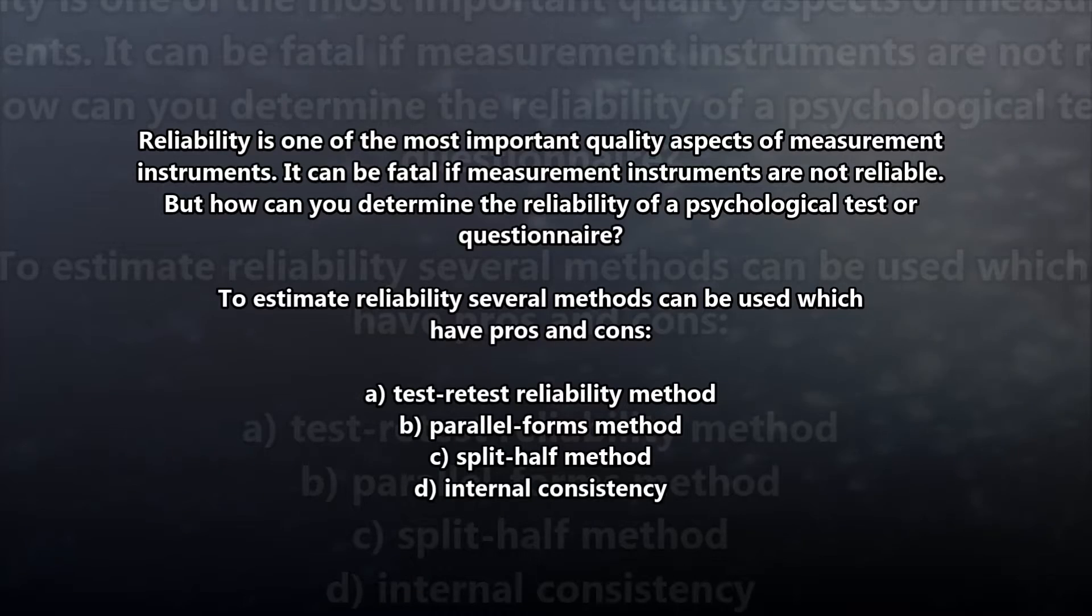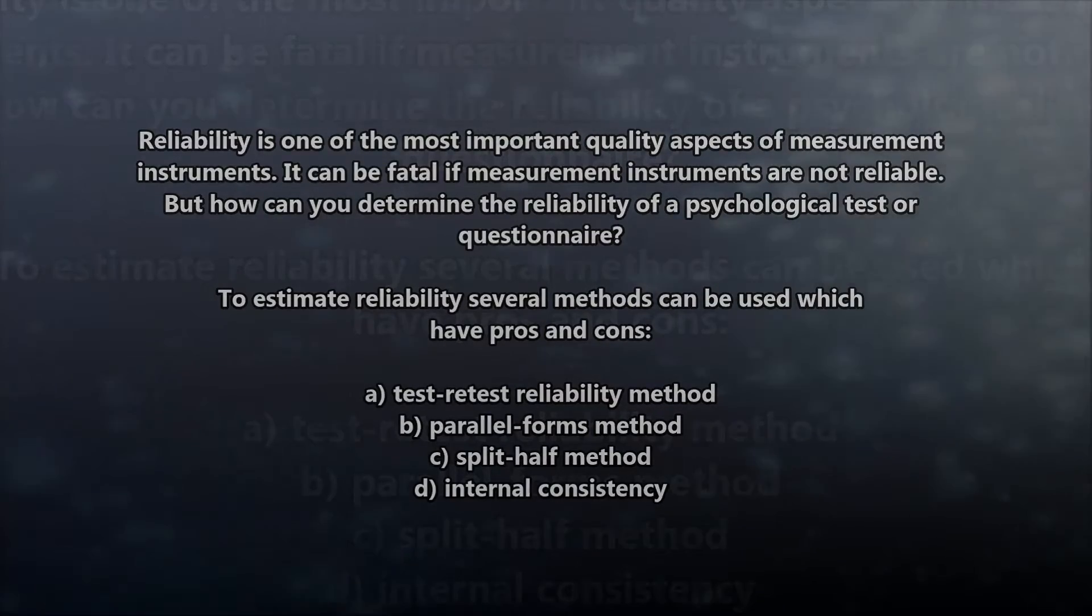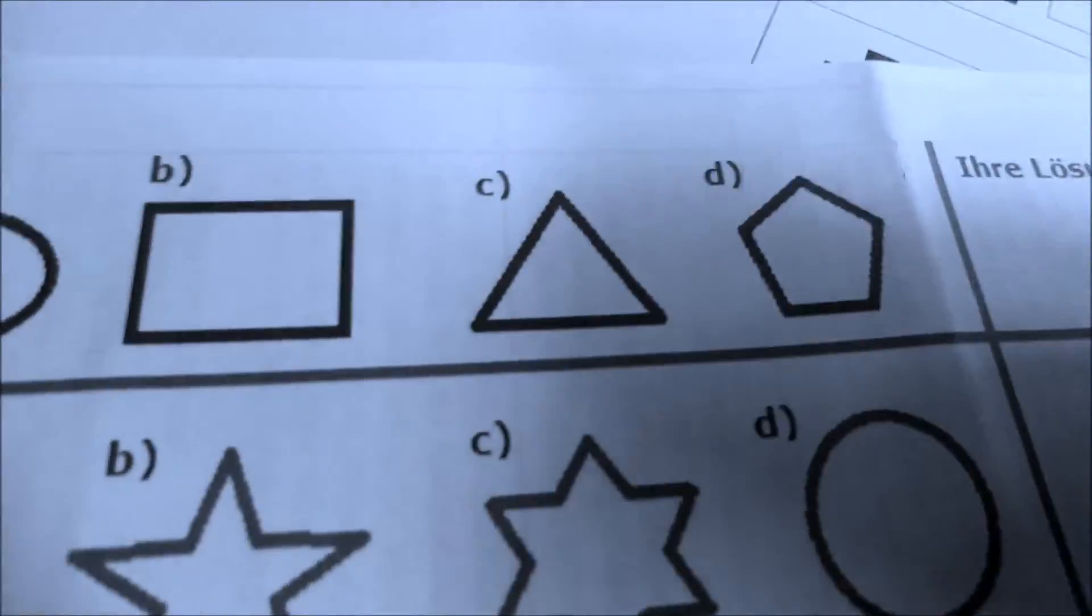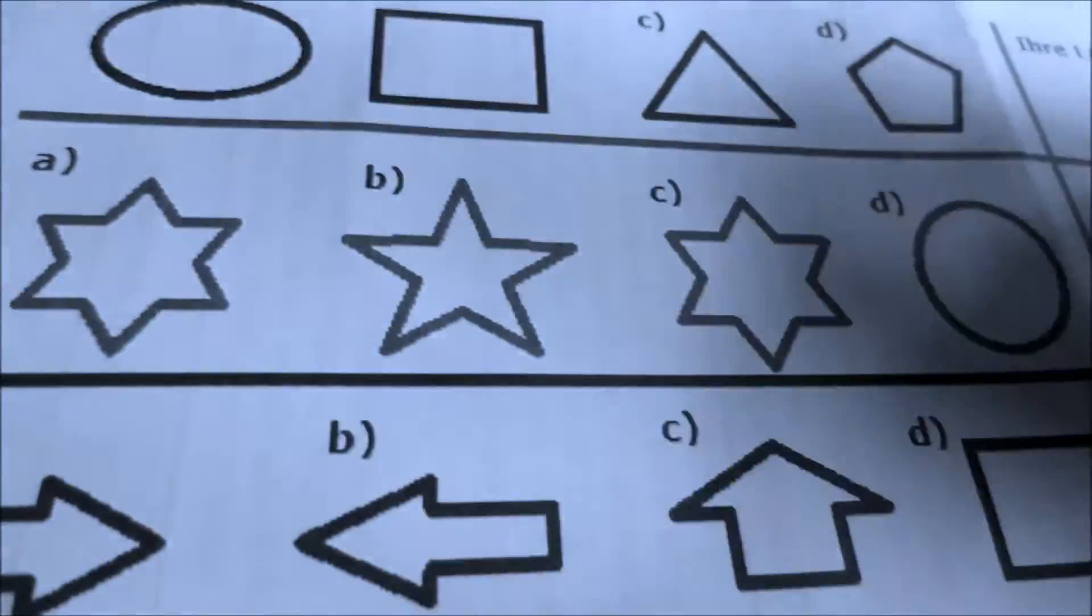Let's suppose you are interested in your own intelligence score. Therefore you visit a psychologist to have an intelligence testing and after working on different tasks you finally get your score which is, well, because it's you, it's probably above average. So let's suppose your score is 120 which is clearly above average and a really good score.